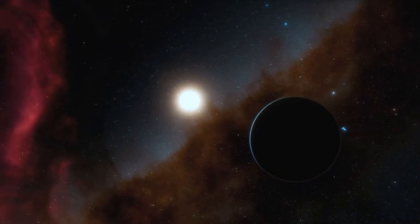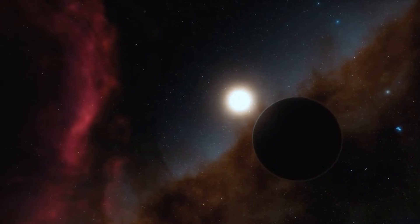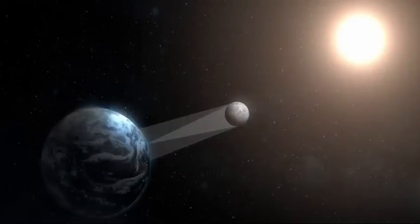However, it passes behind the Earth at a specific angle a few times a year, blocking off all light. This phenomenon is known as a lunar eclipse.